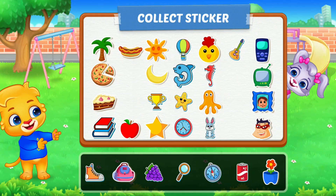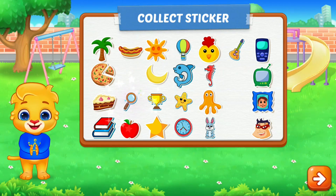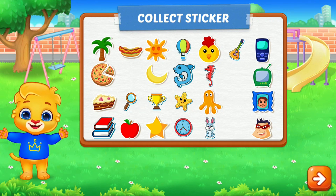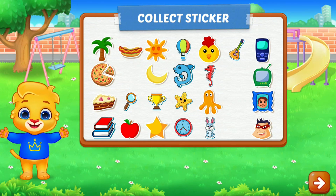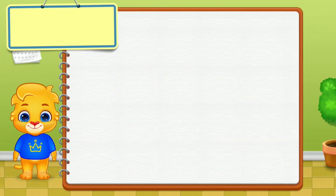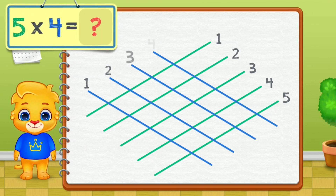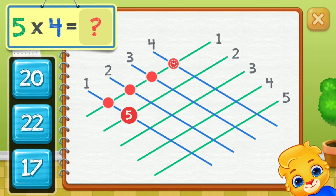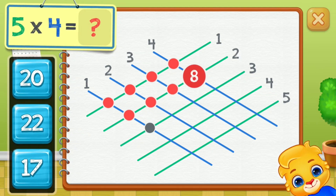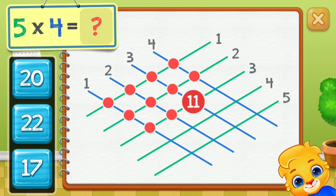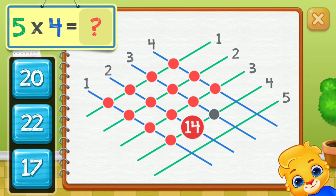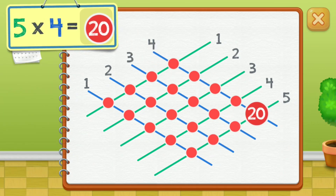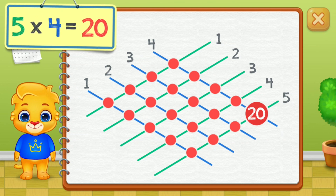Pick a sticker! Five times four equals — one, two, three, four, five, six, seven, eight, nine, ten, eleven, twelve, thirteen, fourteen, fifteen, sixteen, seventeen, eighteen, nineteen, twenty. Five times four equals twenty.